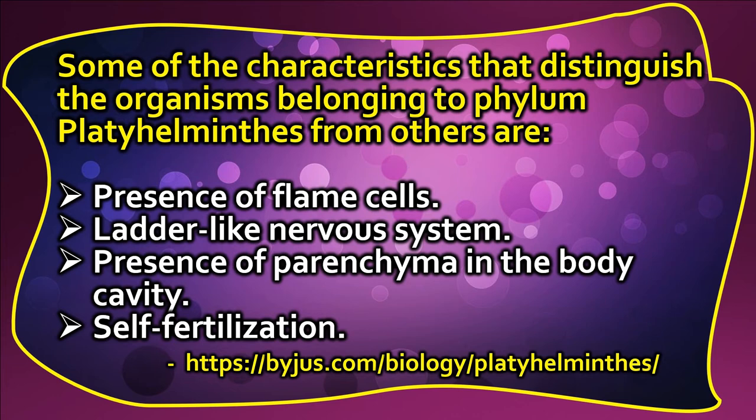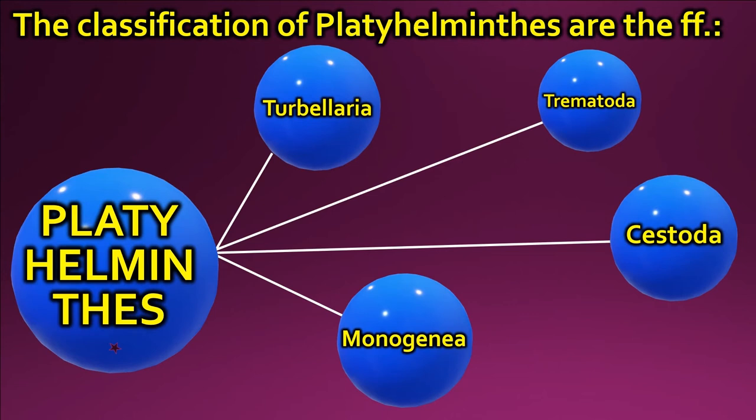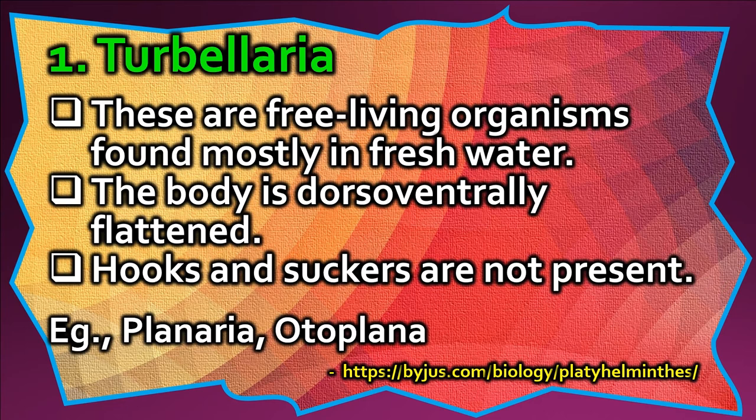The classification of Platyhelminthes includes: Turbellaria, Trematoda, Cestoda, and Monogenea. Turbellaria are free-living organisms found mostly in fresh water. The body is dorso-ventrally flattened. Hooks and suckers are not present.